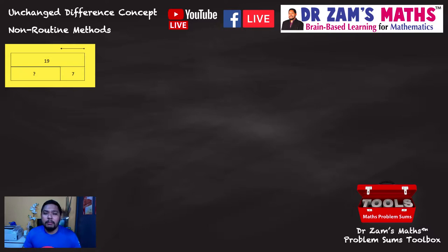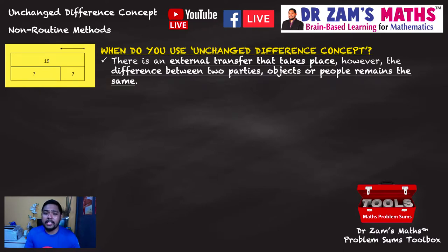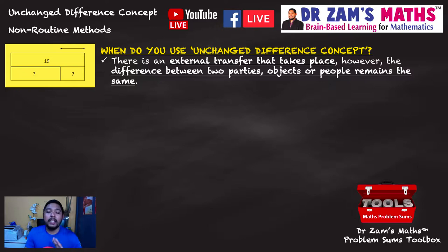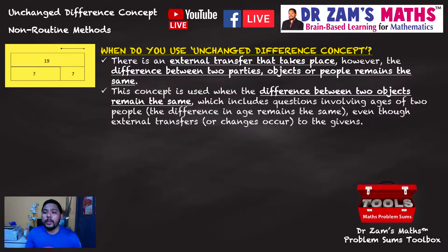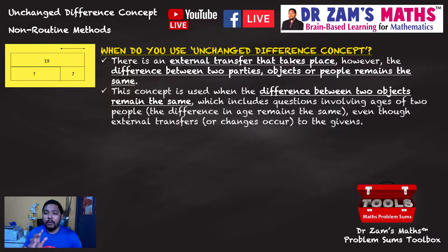Now the third concept in transfer concepts is the unchanged difference concept. As the name implies, there is one object where an external transfer takes place, but the difference between the two parties remains the same. The difference between two objects or people remains unchanged. This concept is normally used when the difference between two objects stays the same — this includes questions pertaining to ages.